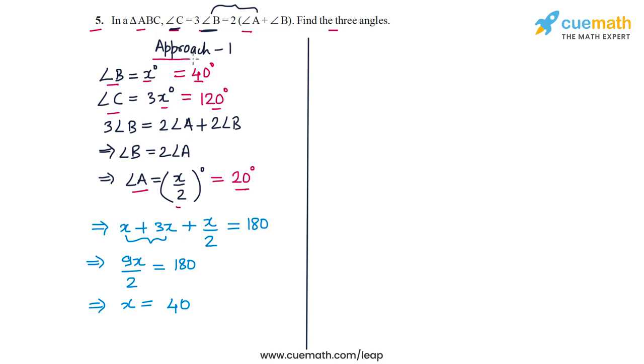So we did this without assuming two variables, but now let's do this same problem by assuming two variables. So let's say that angle A is x degrees and angle B is y degrees. So let's see what equations we can set up in x and y.